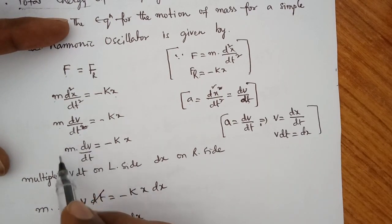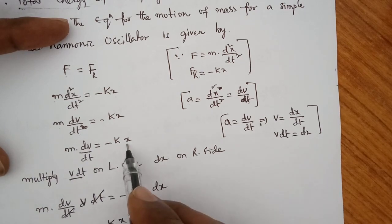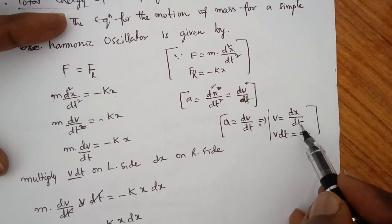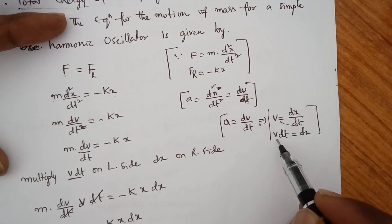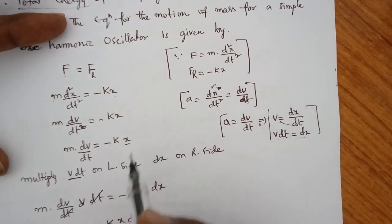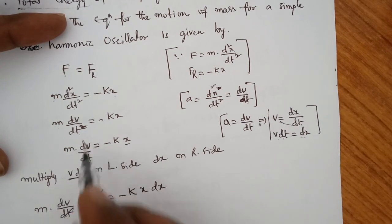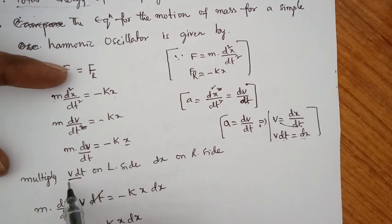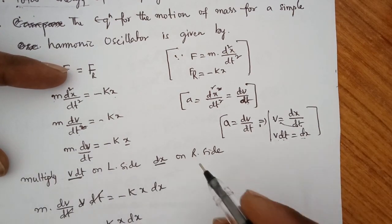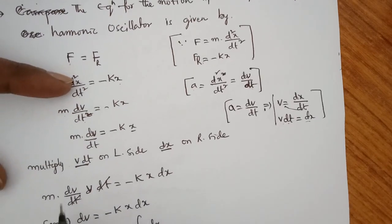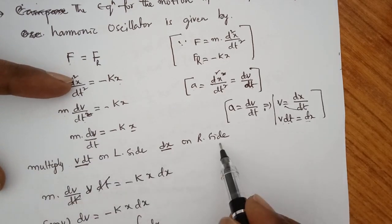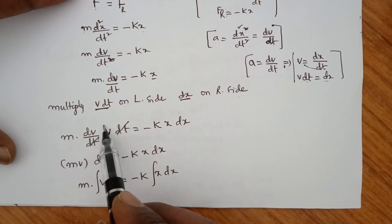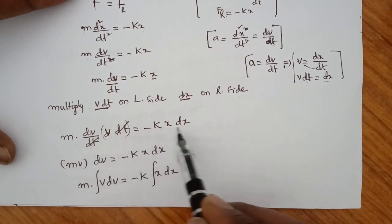Multiplying both sides: left side is v dv and right side corresponds to x dx, since v equals dx/dt. So m into dv/dt, multiplied by v dt on the left equals minus kx, multiplied by dx on the right, and dt cancels.